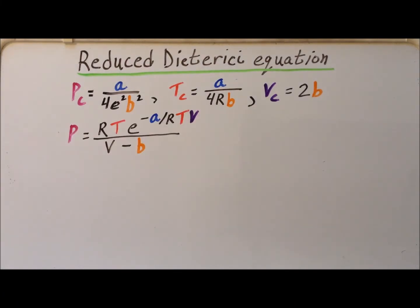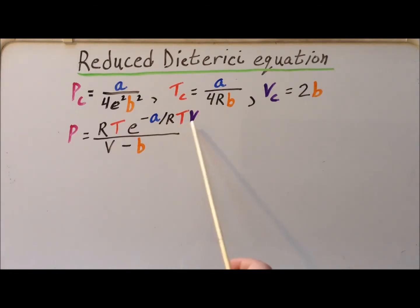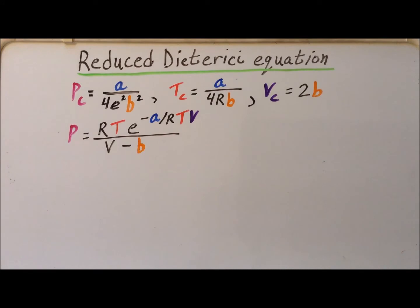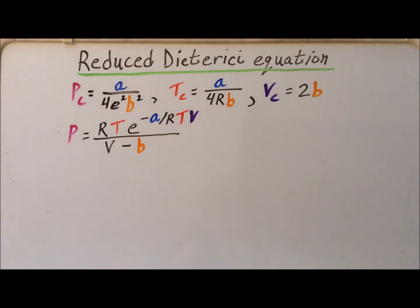We recall the Dieterici equation of state: the pressure P is equal to RT e to the minus A over RTV, divided by V minus B, where V represents the molar volume. Even though there isn't a subscript M, it's been omitted for clarity.